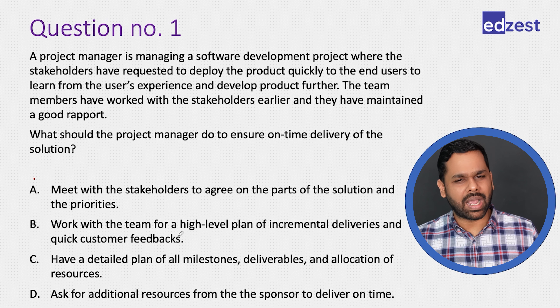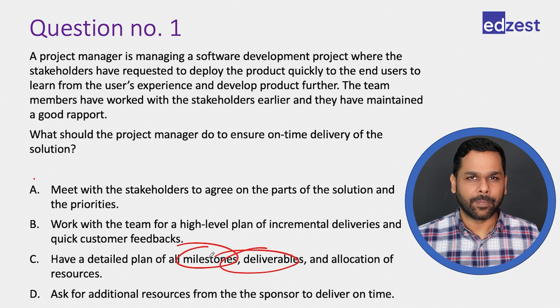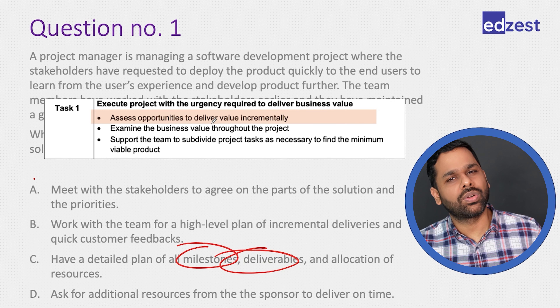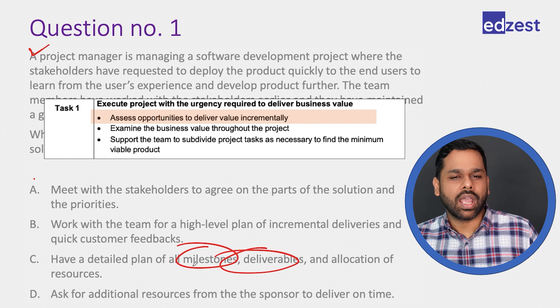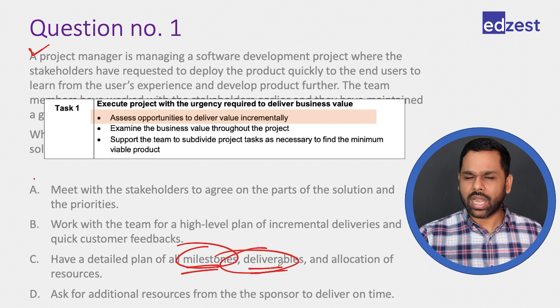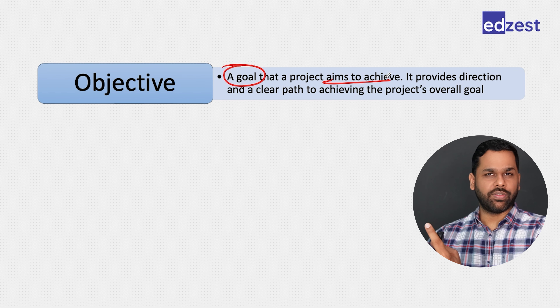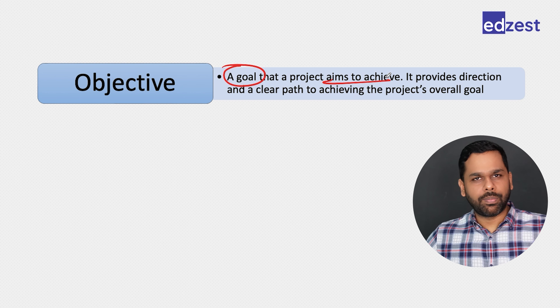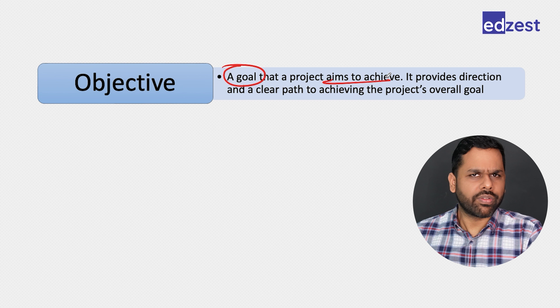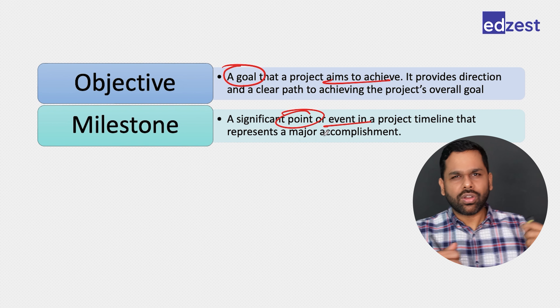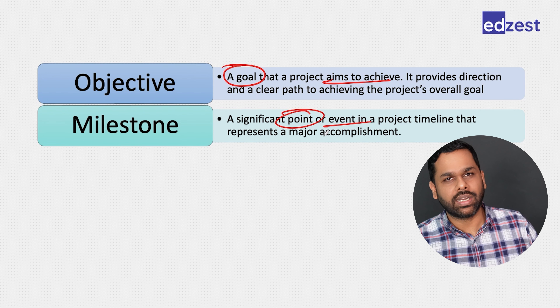This question introduces terms like milestones, deliverables, and objectives. An objective is a goal the project is trying to achieve — it provides direction so everybody pushes the project the same way. Milestones are significant points or events on the project timeline; they represent major accomplishments. Whenever you achieve a milestone, you should celebrate it because it is very important for motivating your team members.